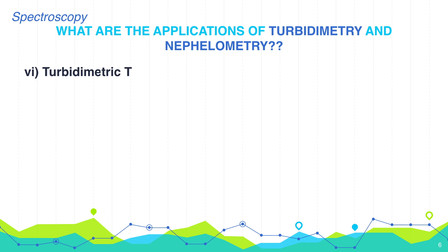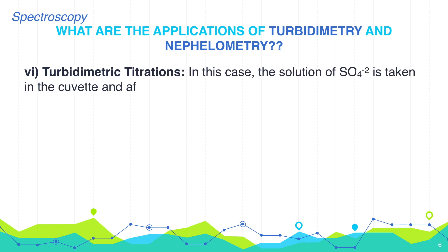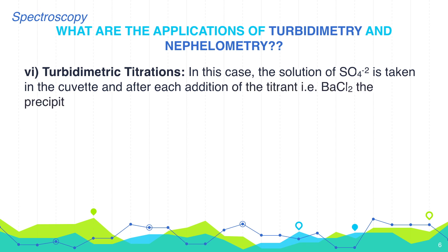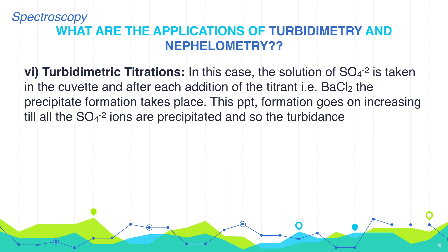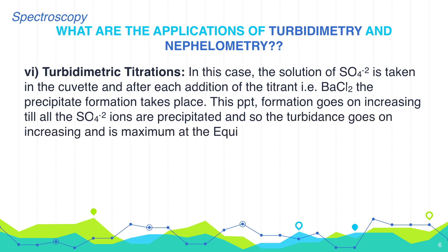Turbidimetric titrations. In this case, the solution of sulfate is taken in cool air. After each addition of the titrant, i.e., barium chloride, precipitate formation takes place. This precipitate formation goes on increasing till all the sulfate ions are precipitated. The turbidity goes on increasing and is maximum at the equivalence point, after which it remains constant.